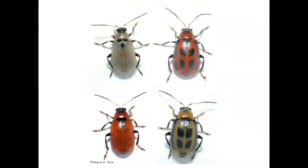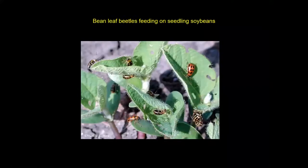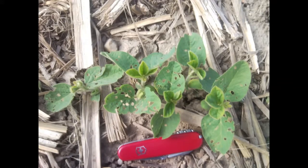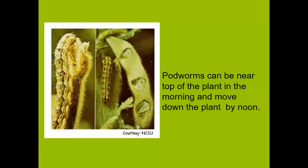Bean leaf beetles are a sporadic pest of soybeans in Alabama. They're not as serious a pest as they once were. They come in different color phases. They can move into seedling soybeans and do quite a bit of damage, especially along field borders. This is the kind of feeding damage they do, and once damage gets to this level, you would certainly want to spray your seedling soybeans for bean leaf beetles.